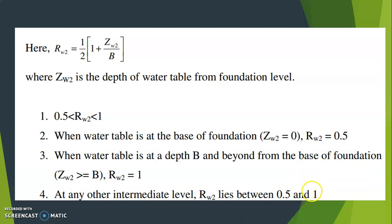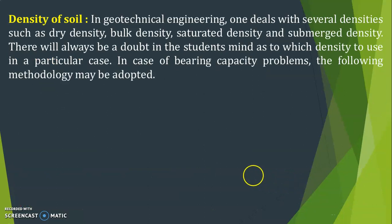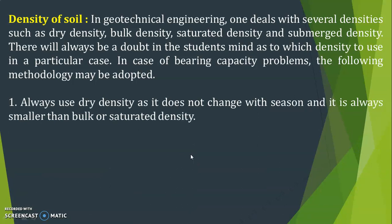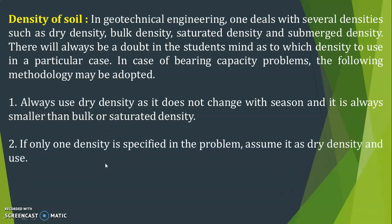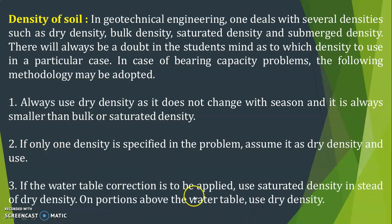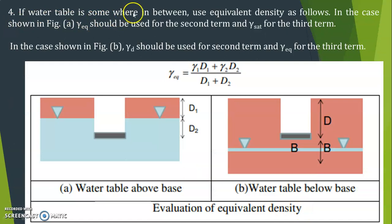In geotechnical engineering, one deals with several densities: dry density, bulk density, saturated density, and submerged density. For bearing capacity problems, the recommended methodology is: always use dry density as it does not change with season and is smaller than bulk or saturated density. If only one density is specified, assume it is dry density. If water table correction is to be applied, use saturated density above the water table instead of dry density.